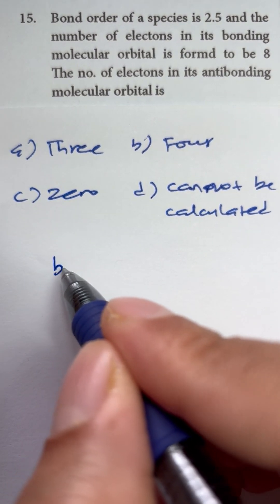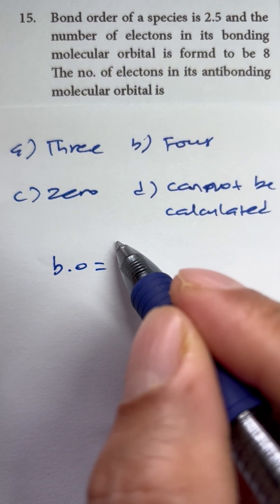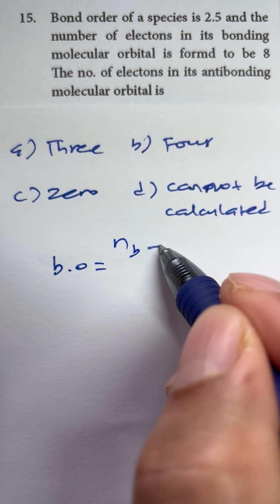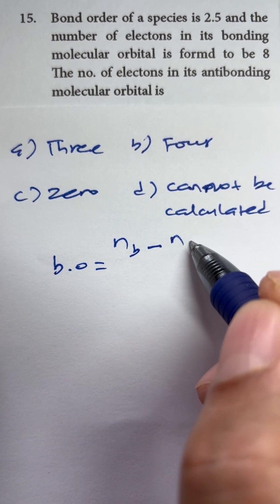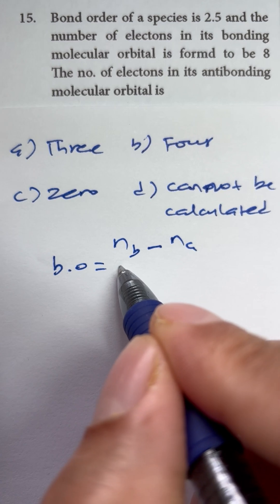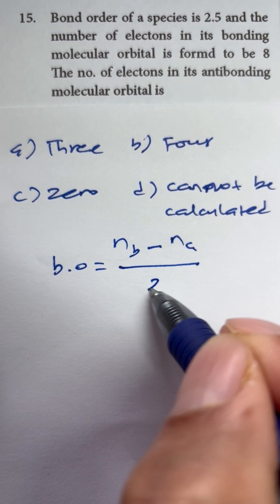We know that the bond order equation is number of electrons in bonding molecular orbitals minus number of electrons in antibonding orbital divided by 2.